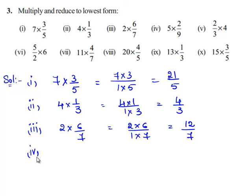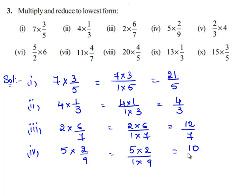Now let us take the fourth bit: 5 times 2 by 9. We multiply the corresponding numerator and denominator. Therefore 5 times 2 divided by 1 times 9 gives 10 by 9. Since 10 and 9 do not have a common factor, the lowest form of the fraction is 10 by 9 itself.